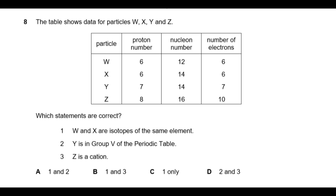The next question says the table shows data for particles W, X, Y, and Z, giving the number of protons, nucleon number, and electrons. Note that the middle column is the nucleon number — that is the sum of protons and neutrons, not just the neutron number. We have to read all three statements and critically analyze whether each is justified by the table.